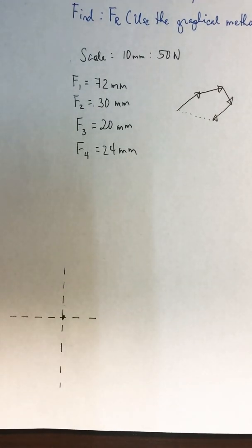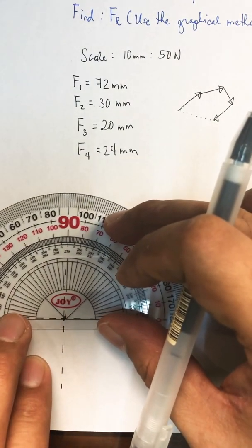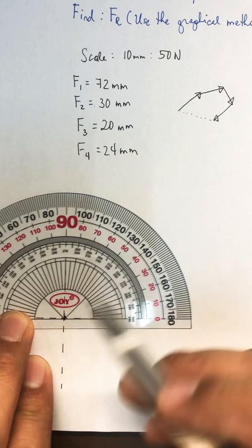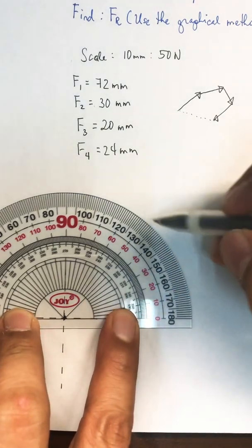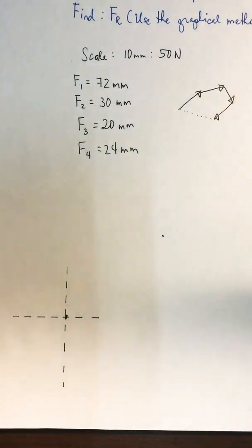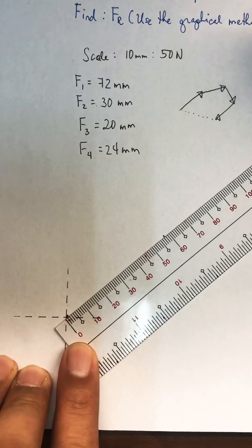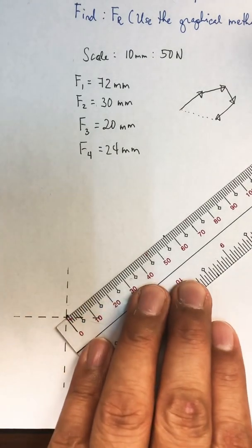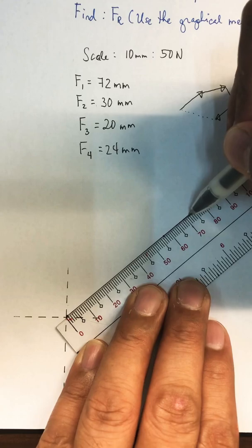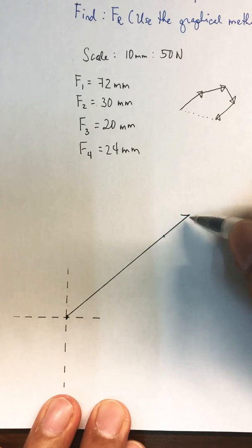For the first vector, it's going to be 40 degrees north of east, so we put our protractor here. Remember that the origin of your protractor should be at this point. 40 degrees is somewhere here. Then we measure 72 millimeters using your ruler, and we draw the line. At the tip of this figure we draw an arrowhead — that is F1.